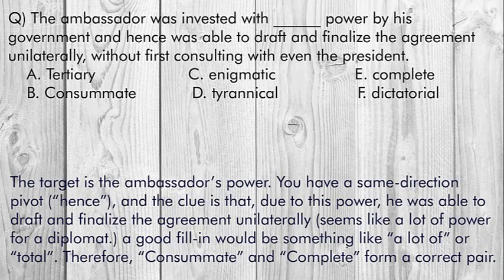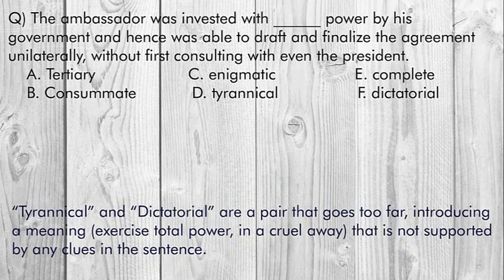Now friends, you can try this question — just pause this video. The target is the ambassador's power, and you have a same-direction pivot 'hence.' The clue is that due to this power, he was able to draft and finalize the agreement unilaterally — seems like a lot of power for a diplomat. A good fill-in would be something like 'a lot of' or 'total.' Therefore, consummate and complete form a correct pair. Tyrannical and dictatorial go too far, introducing the meaning of exercising total power in a cruel way, which is not supported by any clues in the sentence.